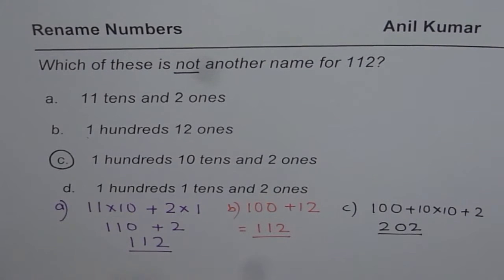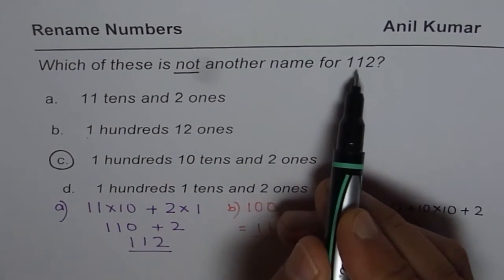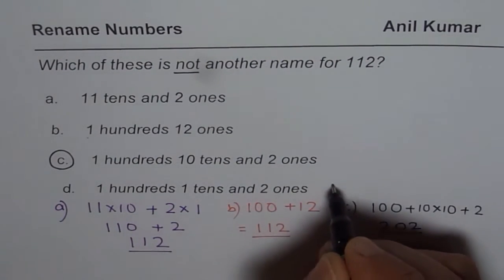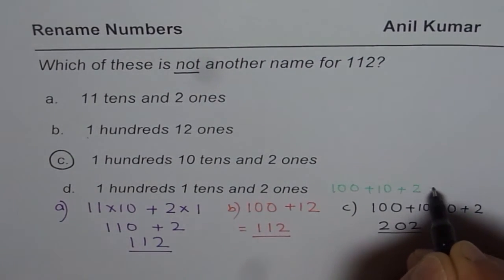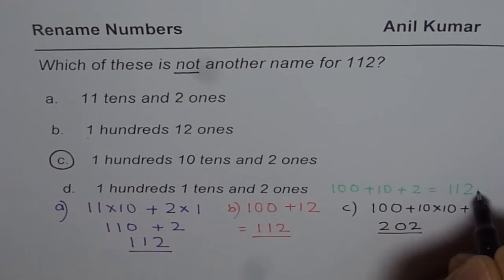The last one is 1 hundreds, 1 tens and 2 ones. That is correct. So we can write this as 100 plus 10 plus 2, which is indeed 112, so that is correct.